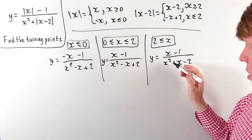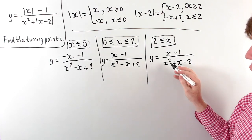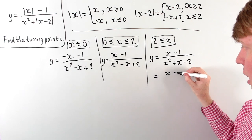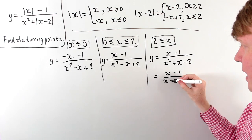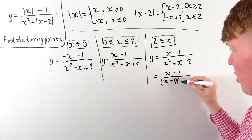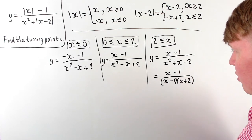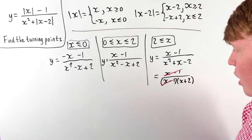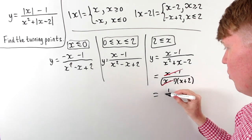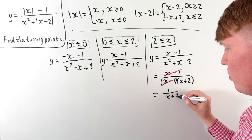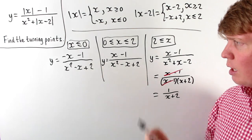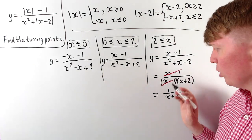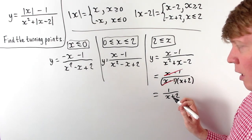Looking at the third case, x squared plus x minus 2 factorises as x minus 1 times x plus 2. The x minus 1 in the numerator and denominator cancel, leaving simply 1 over x plus 2. Unfortunately there is no such nice factorisation or cancellation for the first two cases.